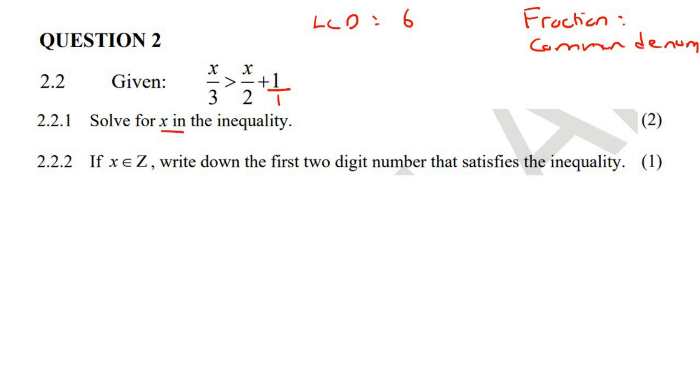So to convert everything to a six, I would multiply this one here by two, this one here by two, because what you do to the bottom, you do to the top. This you would multiply by three, same at the top, and then this you would multiply by six, same at the top. So that's going to leave us with 2x over 6, greater than 3x over 6, plus 6 over 6.